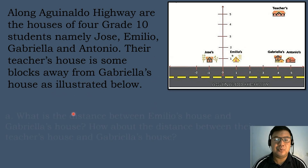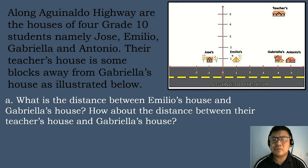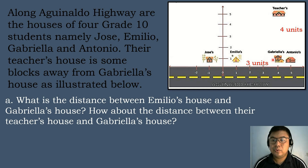What is the distance between Emilio's house and Gabriela's house? Emilio's house is located at coordinate (1, 1), while Gabriela's house is located at coordinates (4, 1). The distance can be obtained by just counting the number line: 1, 2, 3. So the distance between Emilio's house and Gabriela's house is 3 units.